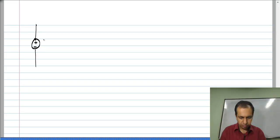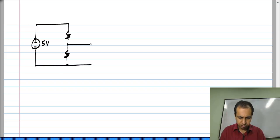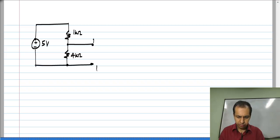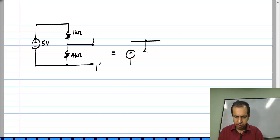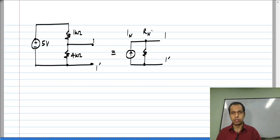Now, I will illustrate a couple of examples of finding the Norton's equivalent of a circuit. Let us take a very simple circuit, and we want to find the equivalent model in this form with a Norton current source and a Norton resistance in parallel.